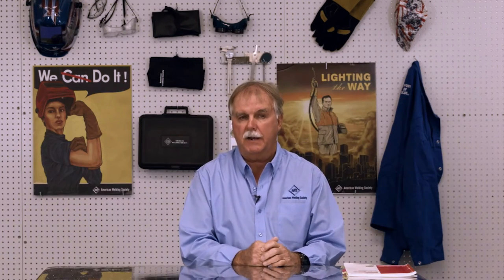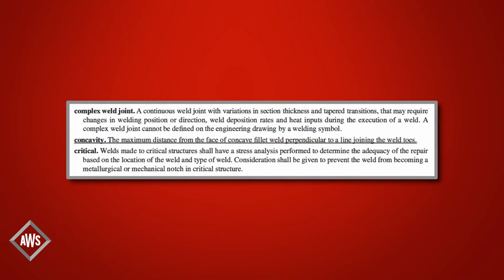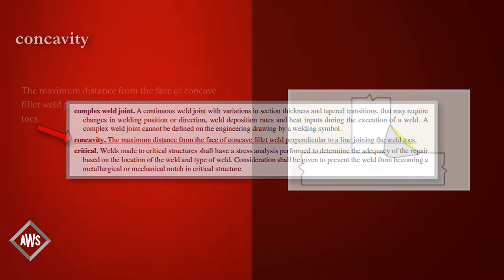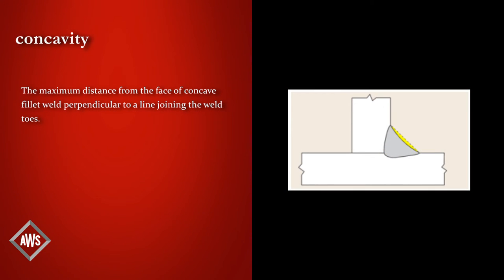Next up is concavity. This term and definition is underlined. Underlined text means that something was changed from the previous edition. In the case of concavity, this word wasn't always in clause 3. However, someone decided it was important enough to be included here, so make sure to pay special attention to it. Concavity is defined as the maximum distance from the face of a concave fillet weld perpendicular to a line joining the weld toes.